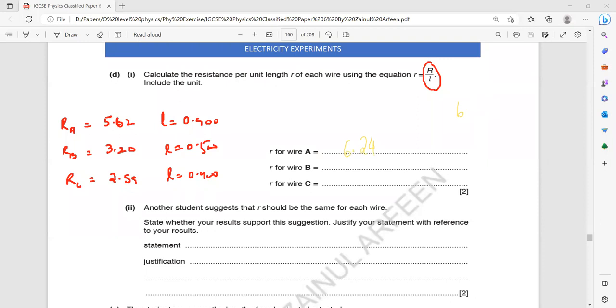What about the second one for B? 3.2 divided by 0.5. 6.4. And the third one, 2.59 divided by 0.4. So this will be 6.48.